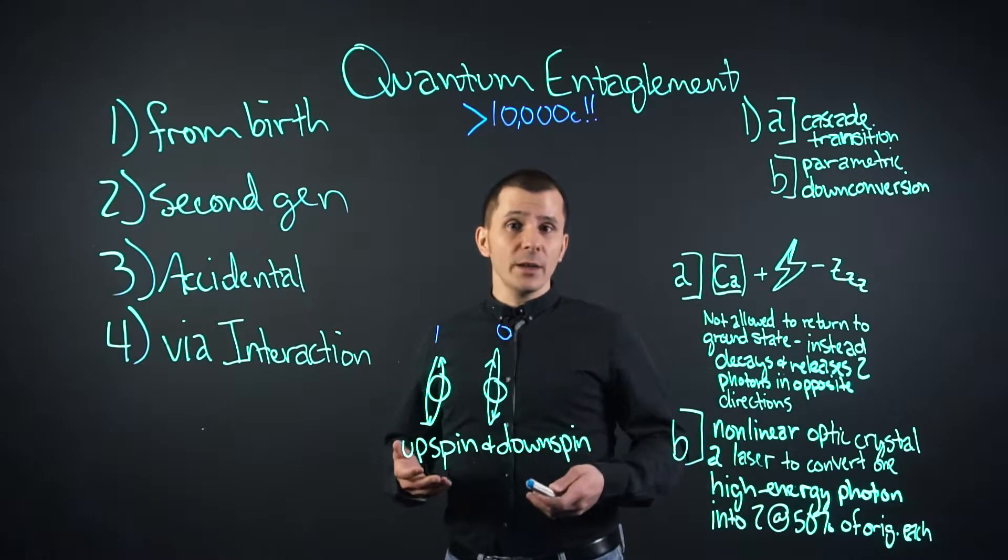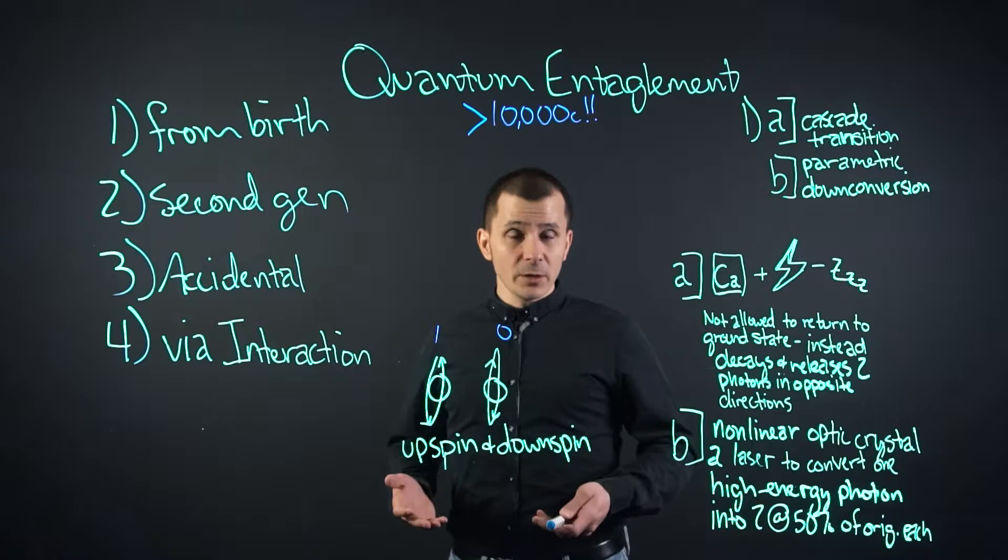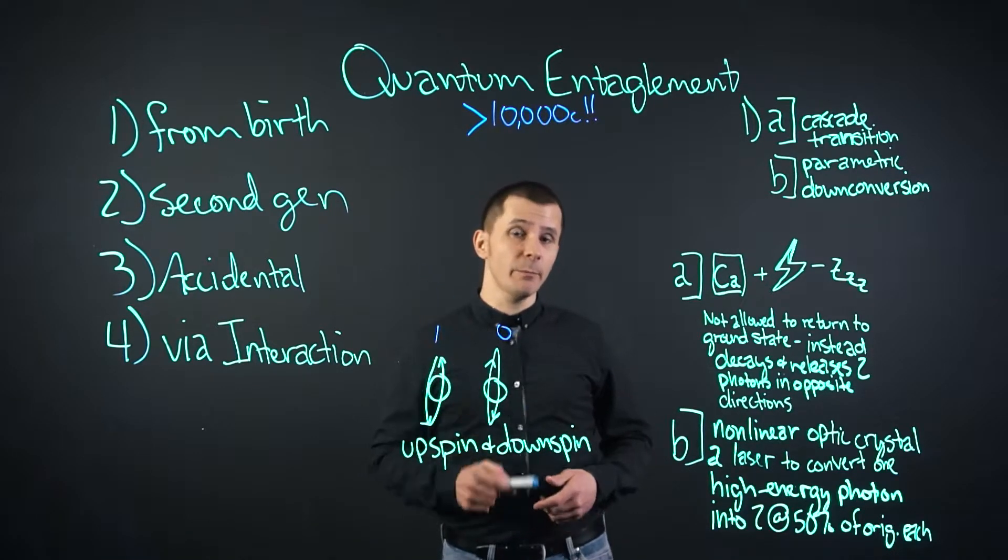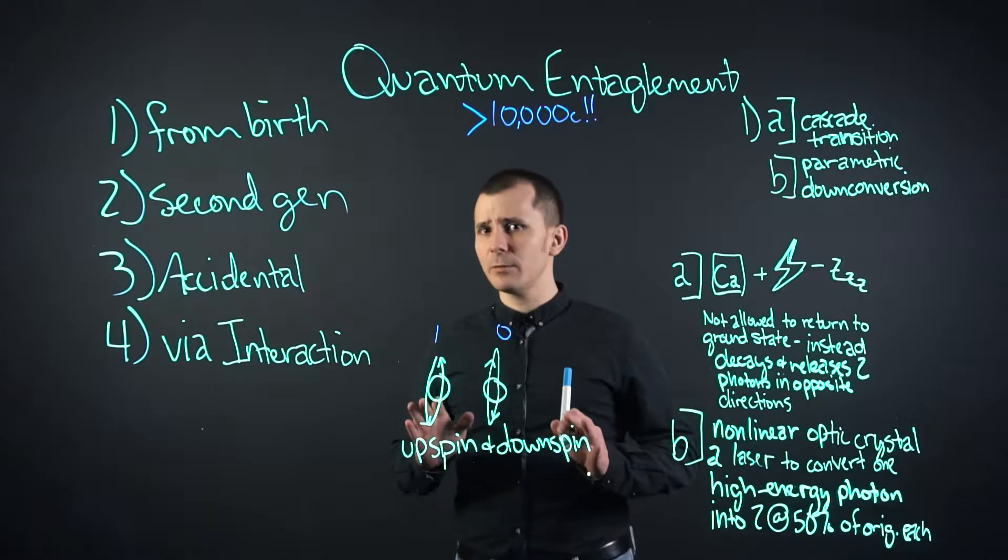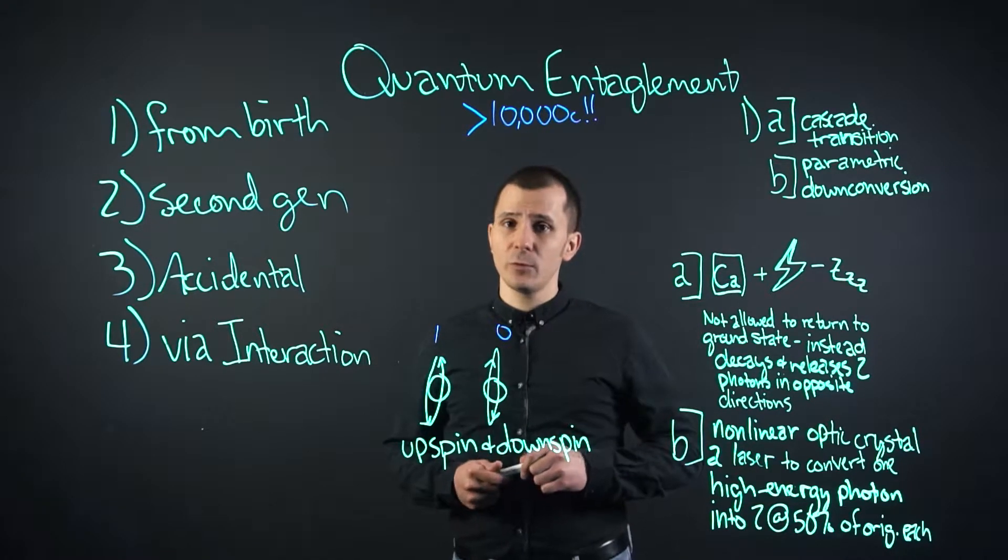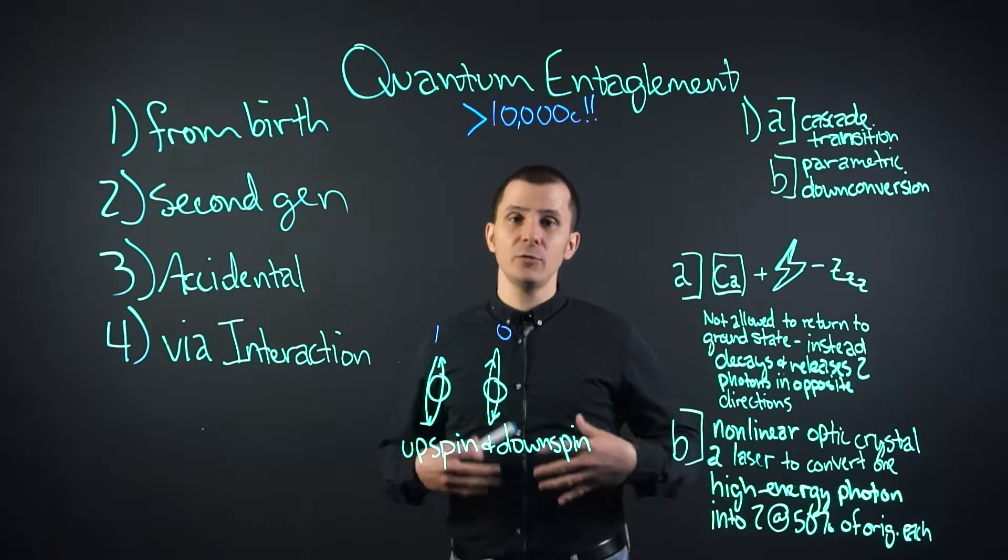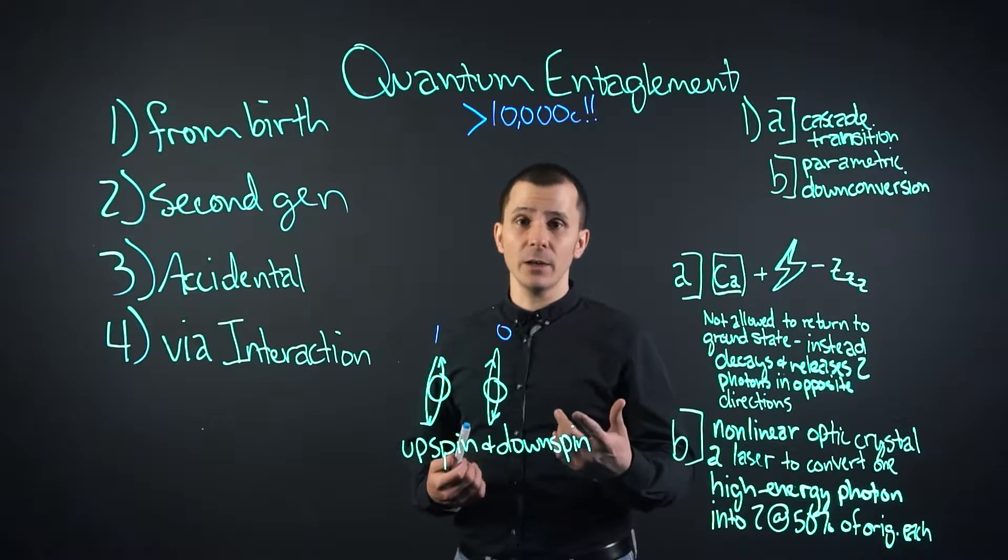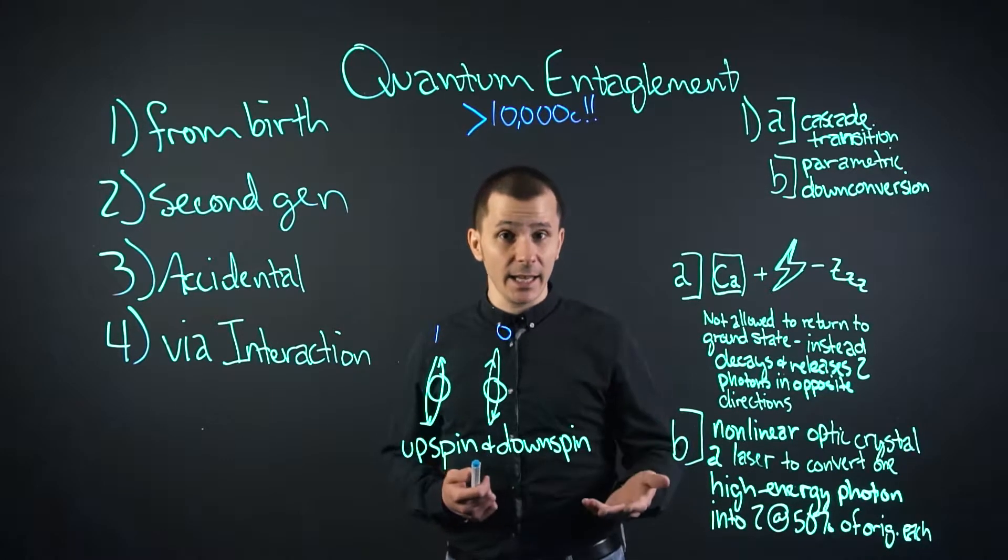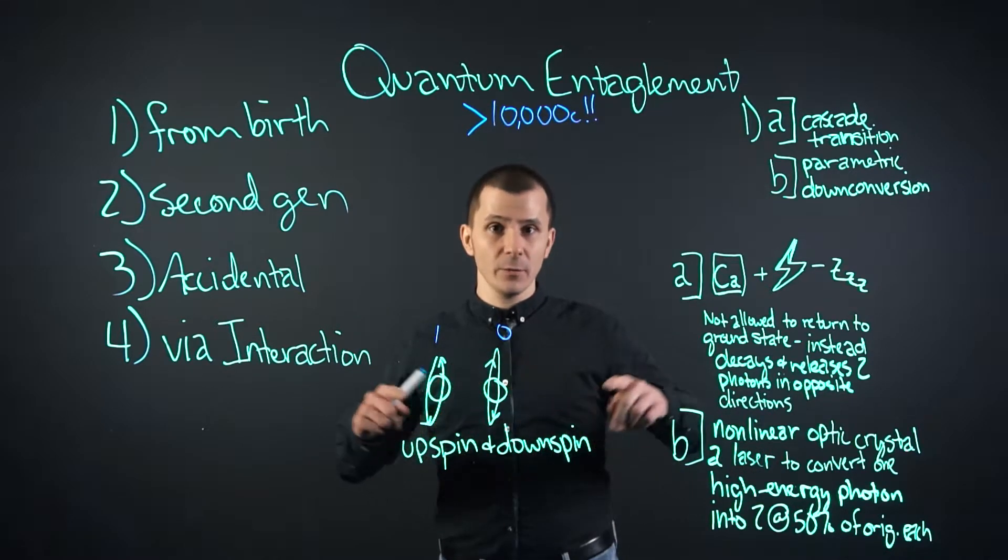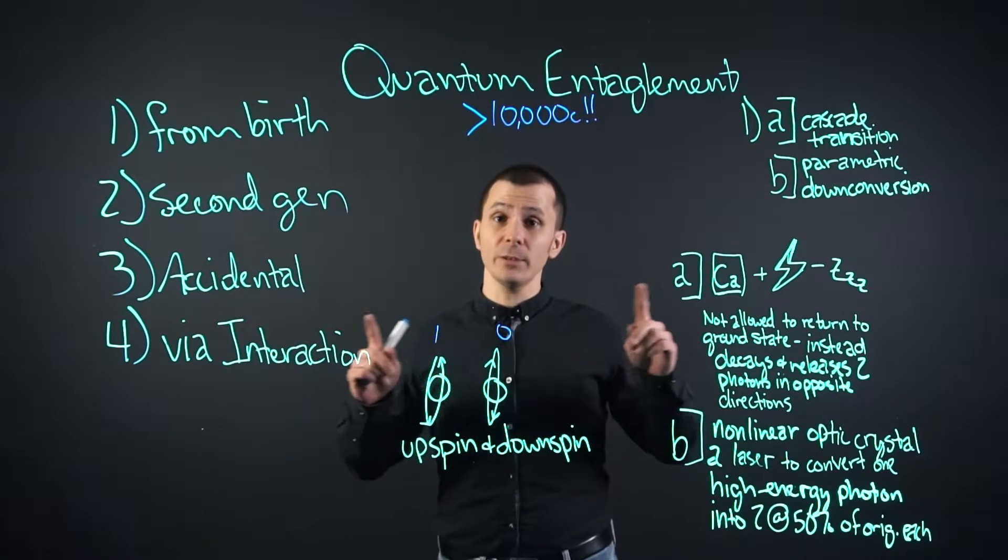So how do you cause a pair of photons or particles to become entangled? The first way is from birth. A long time ago, there was an experiment done with calcium where you energize it, creating a high-energy state, and you don't let the electrons rest. So instead of emitting one photon, the atom decays and emits two in opposite directions with opposite polarization.